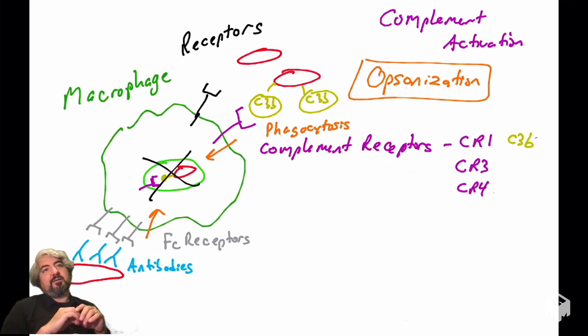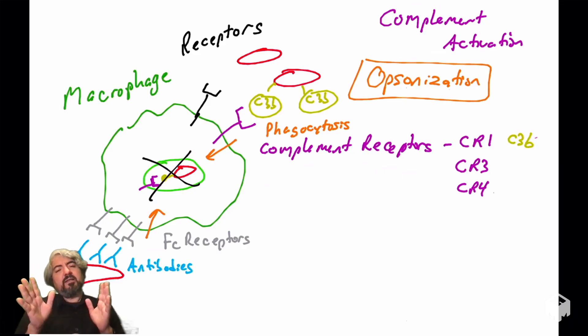Again, covering a pathogen with antibodies, covering a pathogen in C3Bs, complement fixation, both of those are examples of opsonization. The antibodies we'll talk about in a later video. Right now we're focusing on complement. So that is one effector mechanism of complement activation, opsonization.